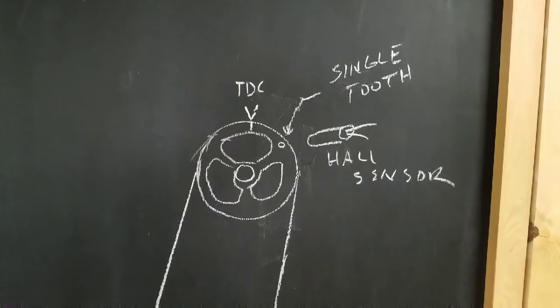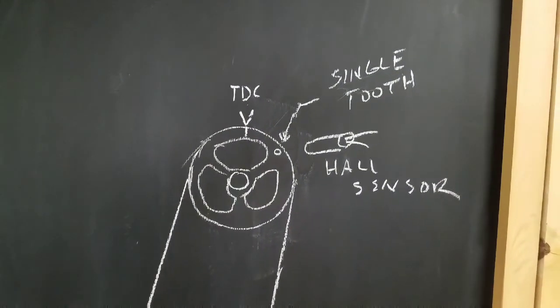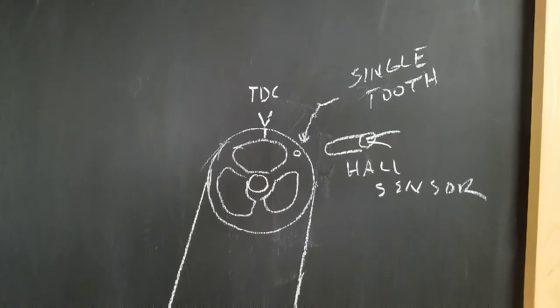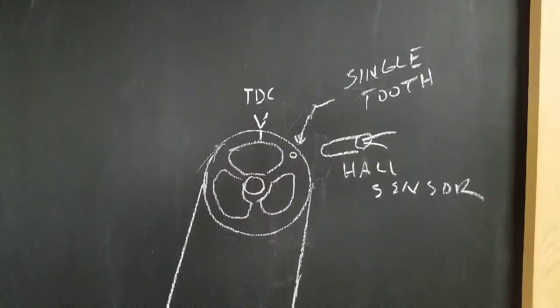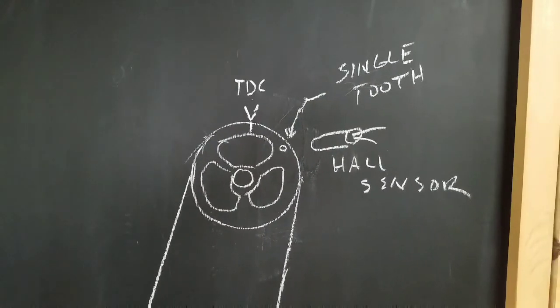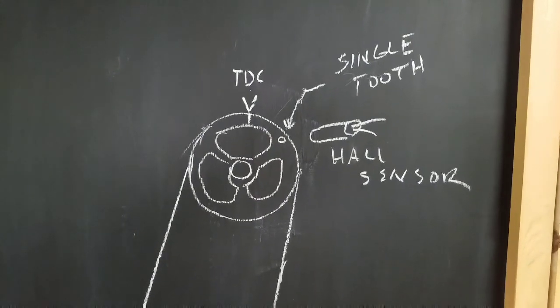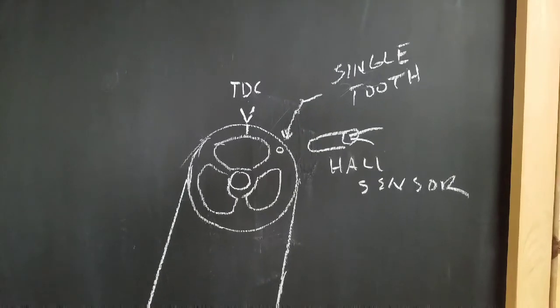Up here in the top, this is just a dowel pin stuck into the cam pulley. It also has a hall sensor and the megasquirt itself observes this and then knows when it is phased correctly to send a spark or send some fuel.